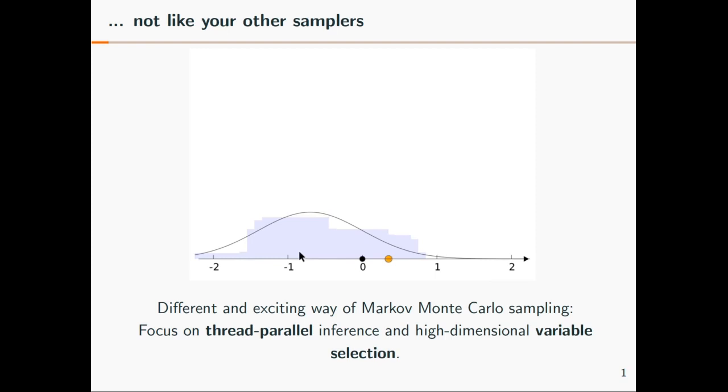So the histogram will approach the density you see in the background which comes from your Bayesian problem. I will argue that this is quite competitive, but it becomes really interesting if you focus on two things we can do which otherwise would be quite difficult: a form of parallel inference and high-dimensional variable selection.